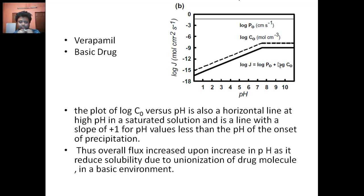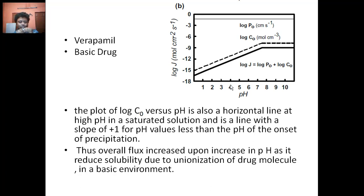For a basic drug like verapamil, which has a pKa above 8, the opposite behavior is observed. At acidic pH, the drug is in its ionized, solubilized form and shows poor absorption. As pH is increased beyond 7 toward 8 and above, the drug becomes unionized and the concentration available for absorption increases, causing the overall flux to increase. This increase in flux with pH is due to the reduced solubility resulting from unionization of the basic drug molecule.